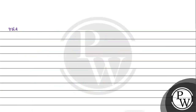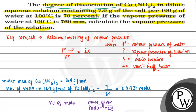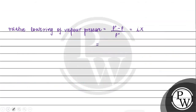Now we calculate the relative lowering of vapor pressure. The formula is (P₀ − P) / P₀ = i × x, where P₀ is the vapor pressure of pure water, i is the Van't Hoff factor, and x is the mole fraction. We have P₀ = 760 mm, i = 2.4, and x = 0.00762. Substituting: (760 − P) / 760 = 2.4 × 0.00762, which equals 0.018.